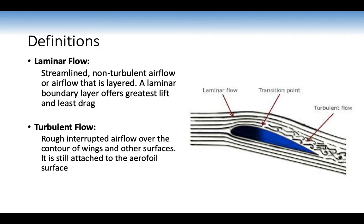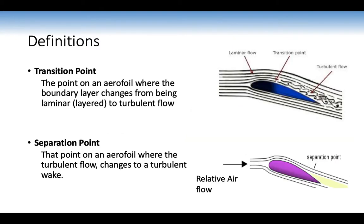Turbulent flow is rough, interrupted airflow over the contour of the wings and other surfaces. It is still attached to the surface of the aeroplane and still offers a little bit of lift, but creates a lot of drag as well — this occurs as the aeroplane approaches the stall. The transition point is the point on the airfoil where the boundary layer changes from being a laminar layer to a turbulent flow. The separation point is the point on an airfoil where the turbulent flow changes to a turbulent wake.